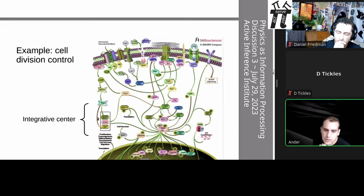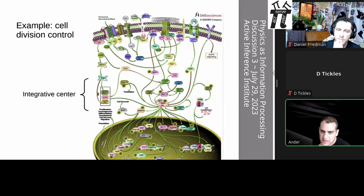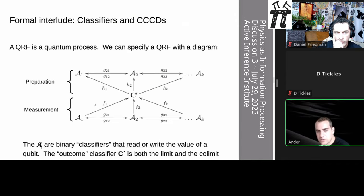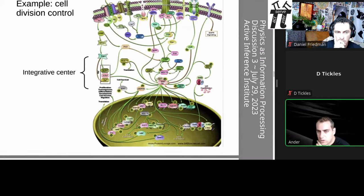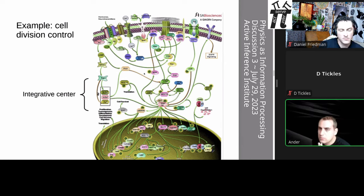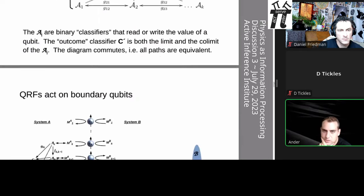Likewise with cell division — the network appears more complicated, but at the end of the day all these chemical networks have to map to the category-theoretical diagram. You're going to have the sensory input, the action output, and the default chemical concentration, which amounts to the node in the diagram.